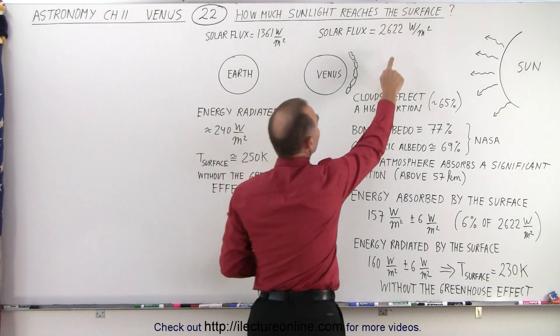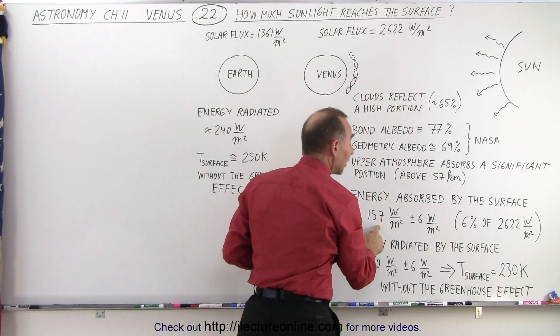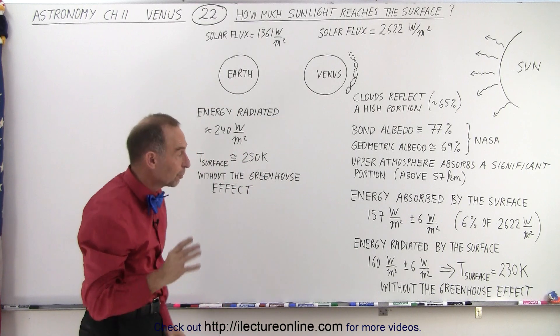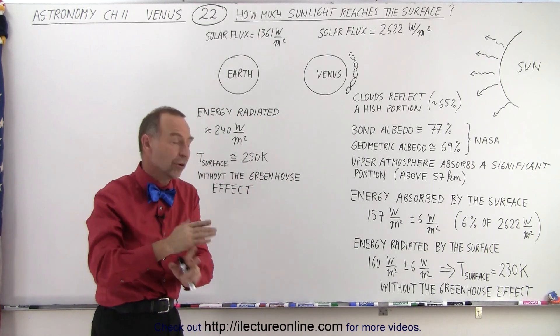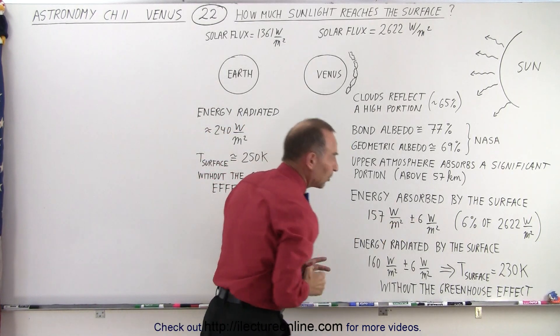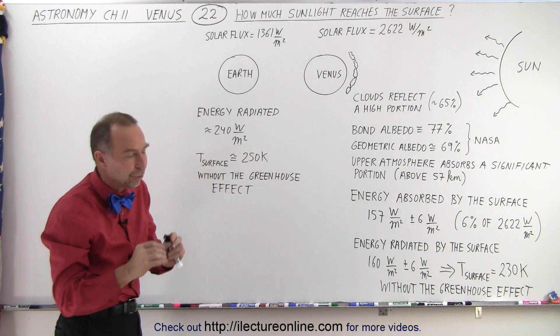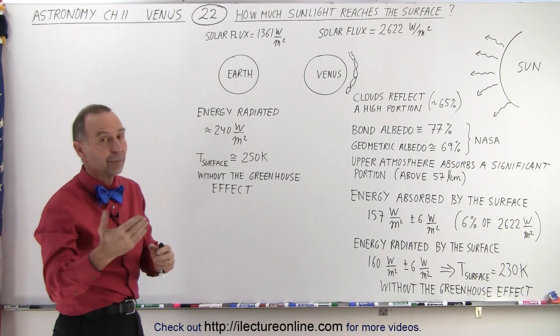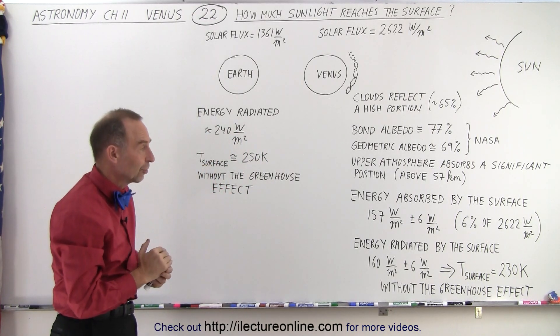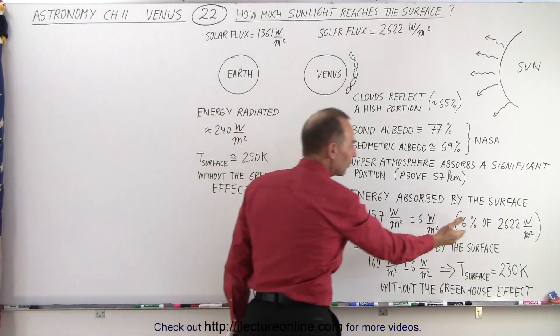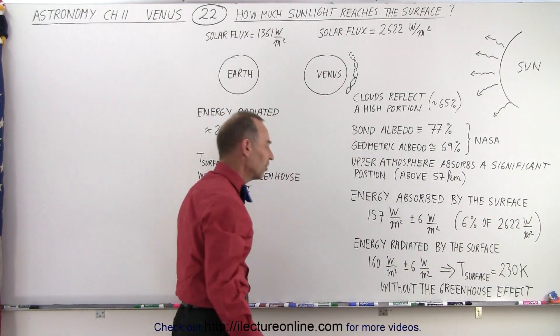Of all the energy that enters the atmosphere at the very top, only about 157 watts per square meter actually make it to the surface, plus or minus 6 watts per square meter because we don't have exact measurements from the instruments that made it all the way down to the surface. It's only about 6% of the total influx of energy from the sun.